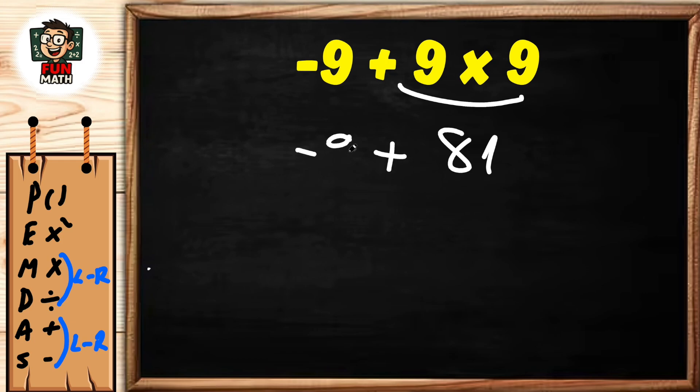Then we add negative 9 plus 81. Here, negative 9 swallows 9 of positive 81. The answer is plus 72.